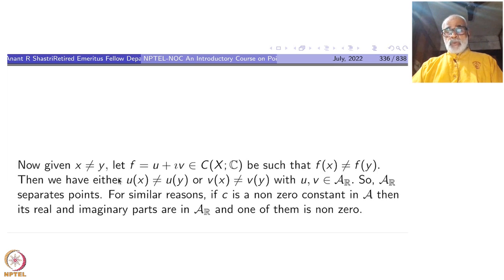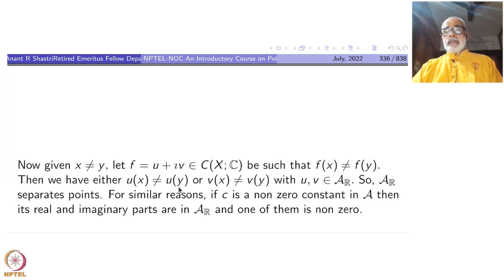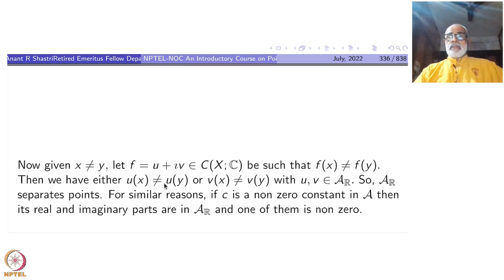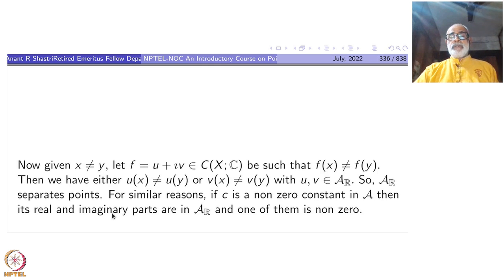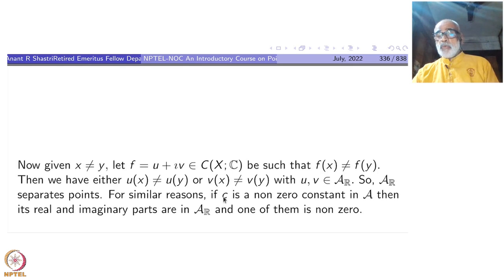In conclusion, closed-under-conjugation implies that A_r = A intersection C(X,R) contains both the real part and imaginary part of every element of A. Now, given x not equal to y, let f belong to C(X,C) such that f(x) not equal to f(y). Writing f = u + iv, this implies either the real parts are distinct or the imaginary parts are distinct. Since u and v are inside A_r, A_r also separates points.